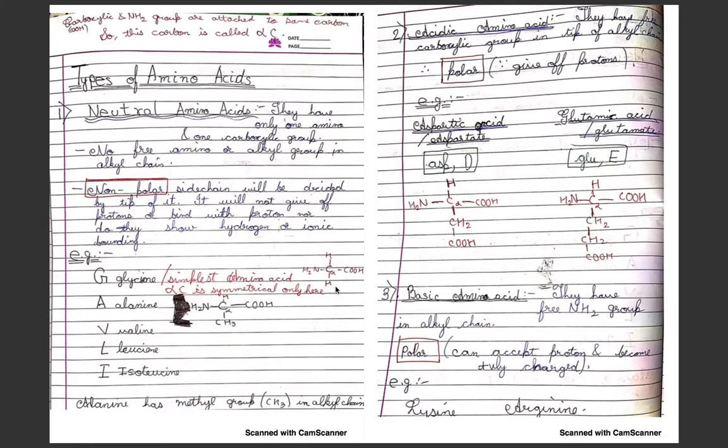Alanine has CH3 in the alkyl group. Neutral amino acids are non-polar because non-polar side chains are decided by the tip of the side chain. If it gives protons or shows hydrogen or ionic bonding, then it is polar. But here it neither gives off protons nor shows hydrogen or ionic bonding, so it is non-polar.